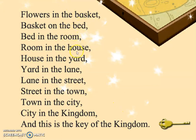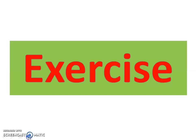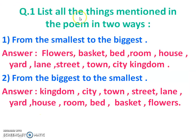In this way we have learned the poem. The poet talks about a key which belongs to a kingdom and tells us all things moving from biggest to smallest, ending with flowers in the basket. Then the reverse sequence: smallest to biggest — basket, bed, room, house, yard, lane, street, town, city, kingdom. Now we will see the exercise. Question number one: list the things mentioned in the poem in two ways. From smallest to biggest: flowers, basket, bed, room, house, yard, lane, street, town, city, kingdom. From biggest to smallest: kingdom, city, town, street, lane, yard, house, room, bed, basket, flowers.